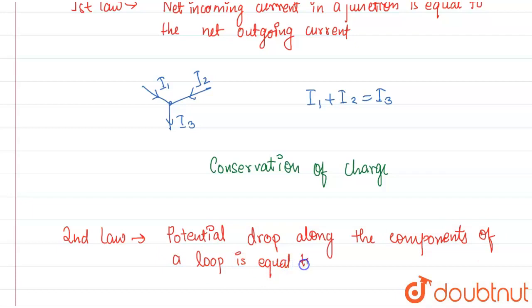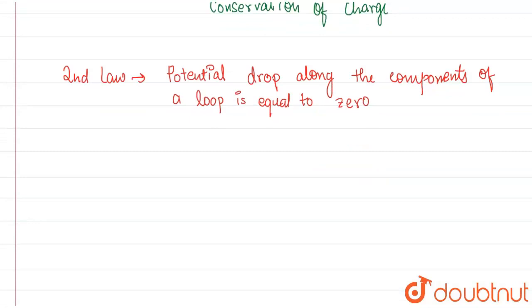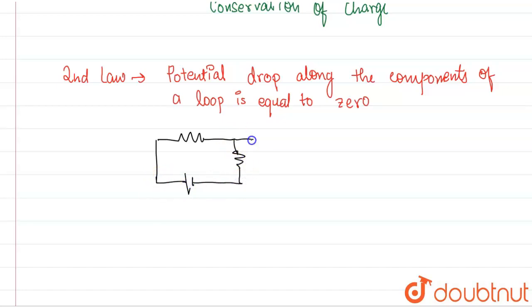So what we understand by this is, let's suppose we are considering a loop. So when we take a loop, let's suppose we are considering a resistance here, a resistance here, and a battery here. This is obviously a loop.